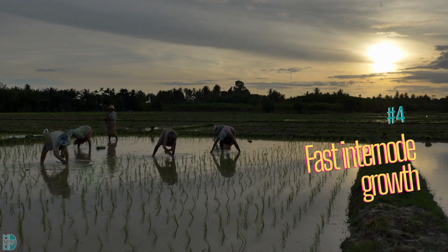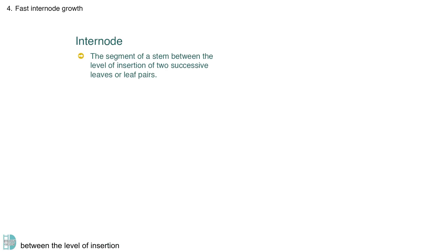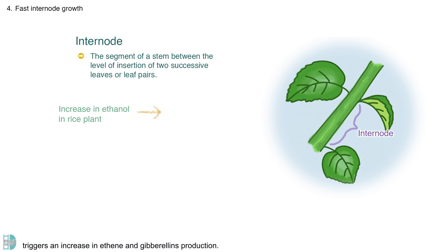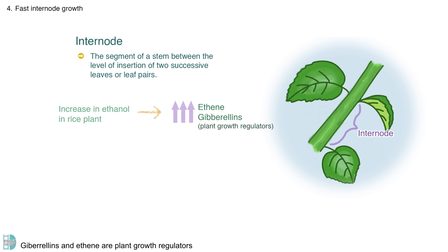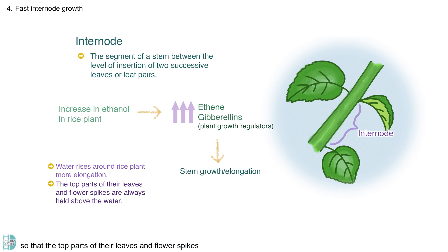Adaptation 4: Fast internode growth. The internode is the segment of a stem between the level of insertion of two successive leaves or leaf pairs. An increase in ethanol in the rice plants triggers an increase in ethylene and gibberellins production. Gibberellins and ethylene are plant growth regulators that can stimulate stem growth. As the water rises around them, this feature keeps them growing upwards so that the top parts of their leaves and flower spikes are always held above the water.